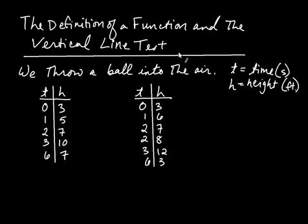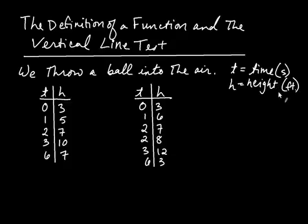Here we're going to introduce what's called the definition of a function and the vertical line test. We're going to imagine a scenario: we're going to throw a ball into the air, where t represents time measured in seconds and h represents height measured in feet. I have two tables here, and the question I want to ask is which table could possibly describe the ball — which one is realistic?